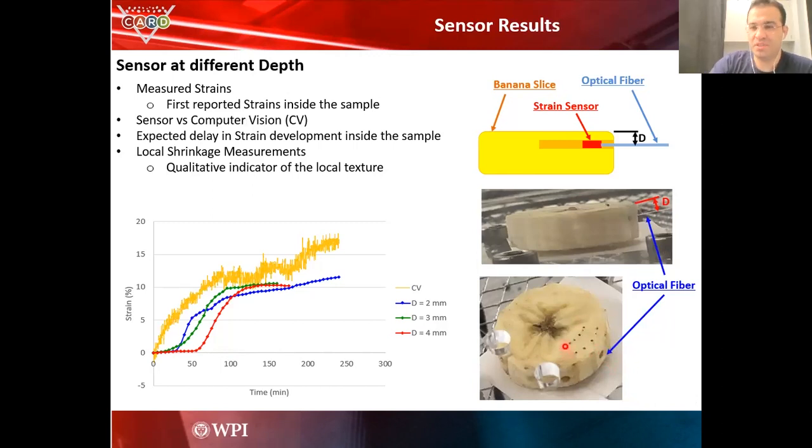As the banana was drying inside the oven, we were measuring the shrinkage. You can see here the result. We put the fiber at different depths and we measured the shrinkage. One other thing that we did here, I'm going to talk about in next slides more, we used computer vision.